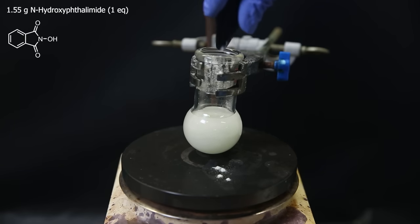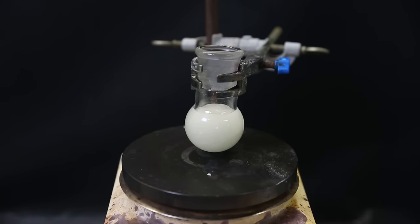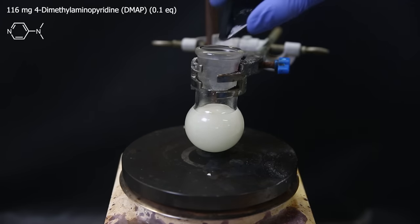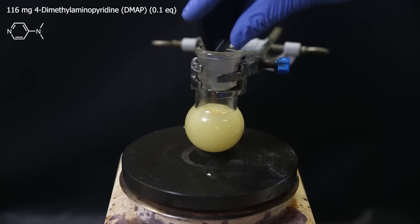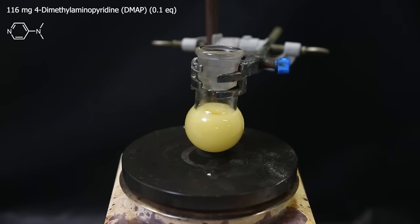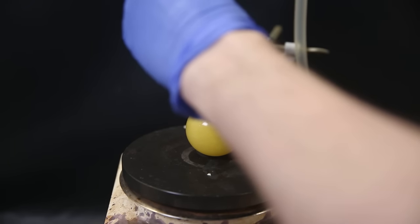I spill some, but it's okay. Then I just move on. Then as the catalyst, I add 116 mg of 4-dimethylaminopyridine, or DMAP for short. It reacts immediately to form a salt with the acid and perhaps produces some intermediate products, causing it to turn yellow.